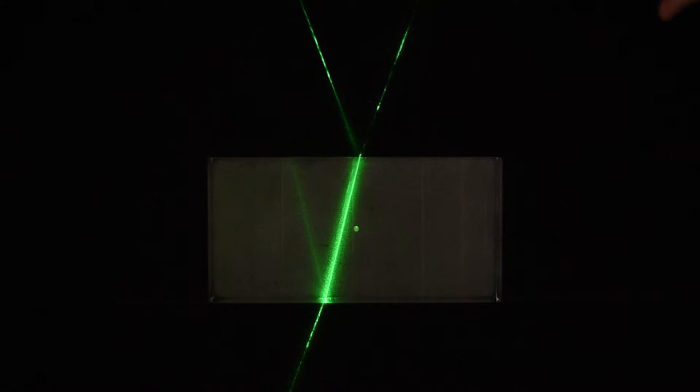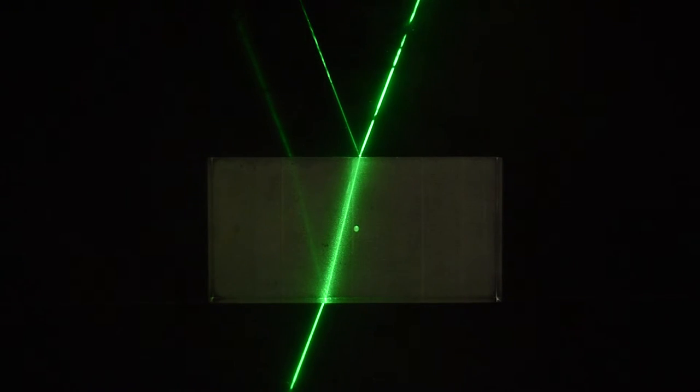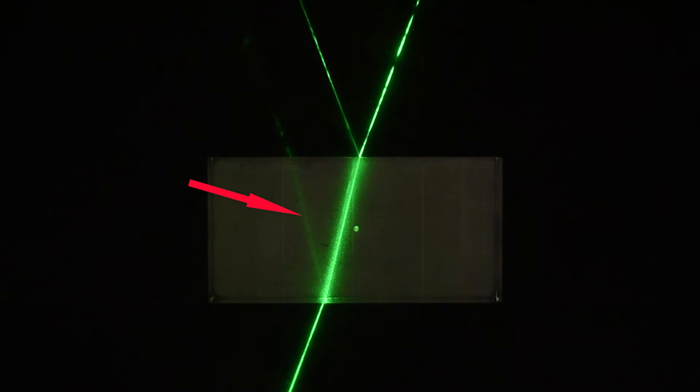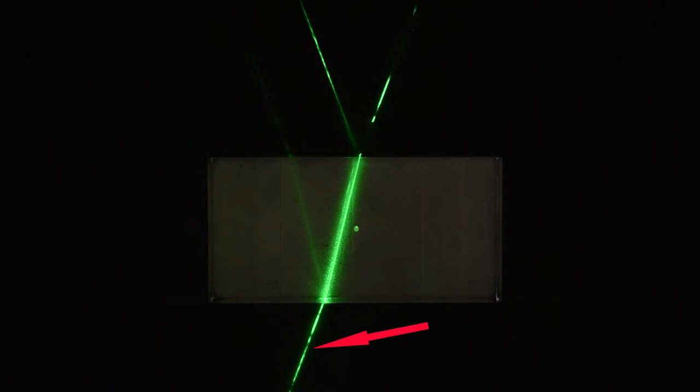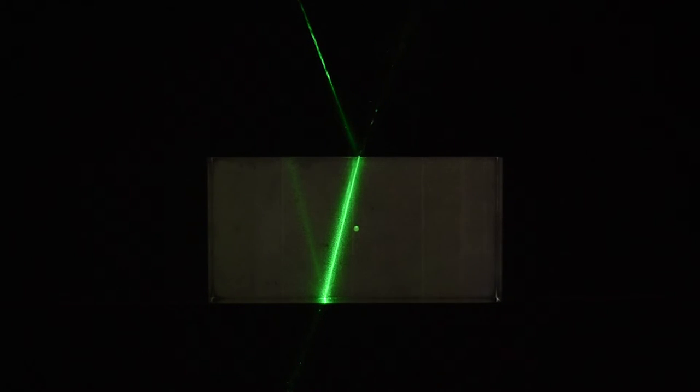Now you can also see that the transmitted beam goes through the material and strikes the bottom surface. And at the bottom surface, you again see two emerging beams. You have a reflected beam, and you also have a refracted beam. But this time, since the beam is coming from a material into air, the refracted beam into air is being bent away from the vertical.